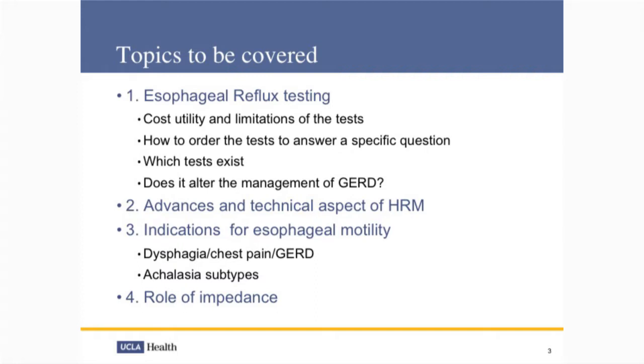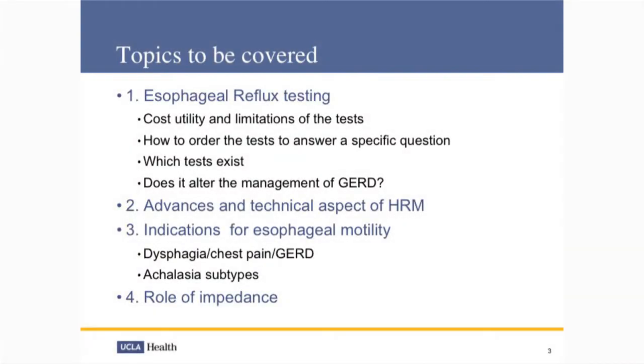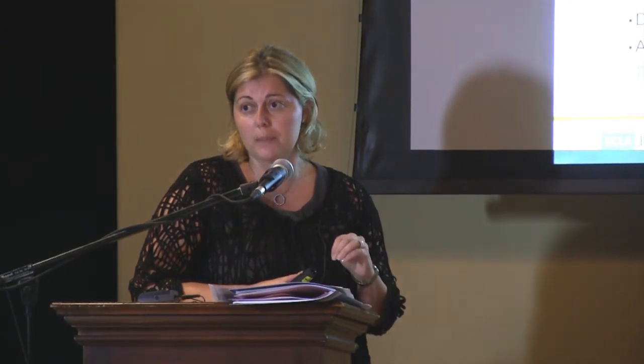There are two types of esophageal manometry. It's basically an esophageal motility study that will measure the pressures of the esophagus and help you differentiate patients who may have dysphagia or non-cardiac chest pain. And then there's a 24-hour pH study which measures how much acid is actually produced in the stomach and therefore causing some of the reflux symptoms. Topics I'll mention include cost utility and limitations of these tests, how to order them, whether patients should be on or off medications, and whether management of gastroesophageal reflux disease is really effective.